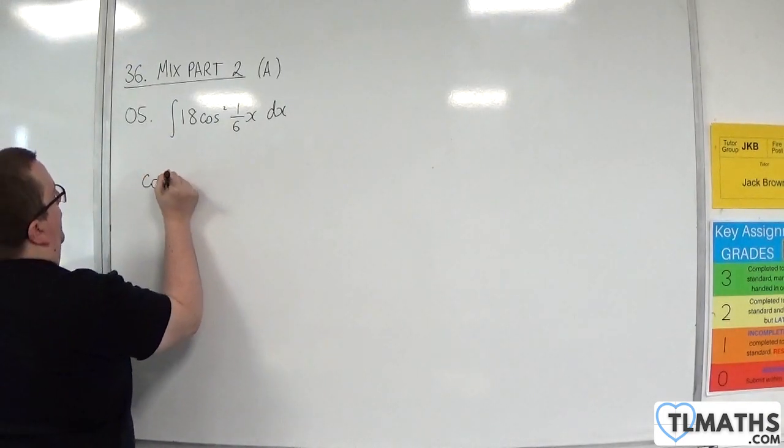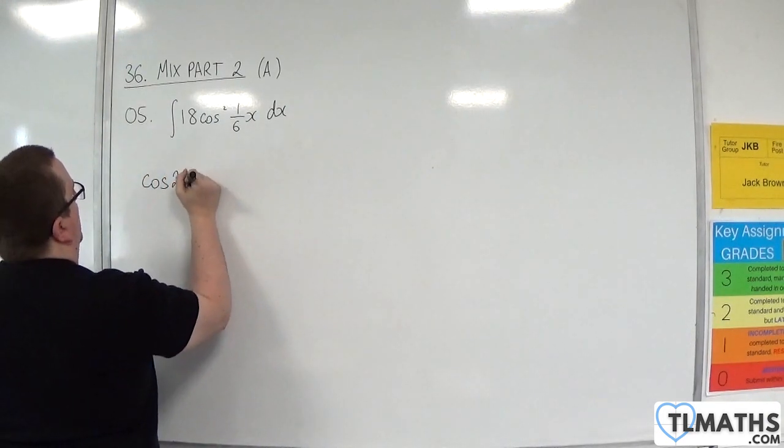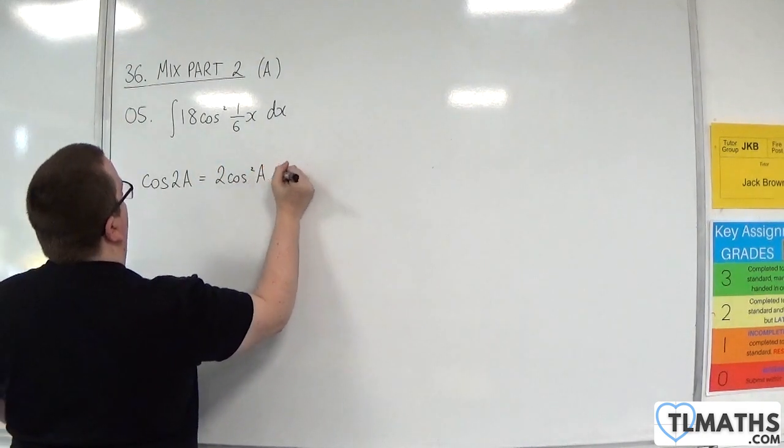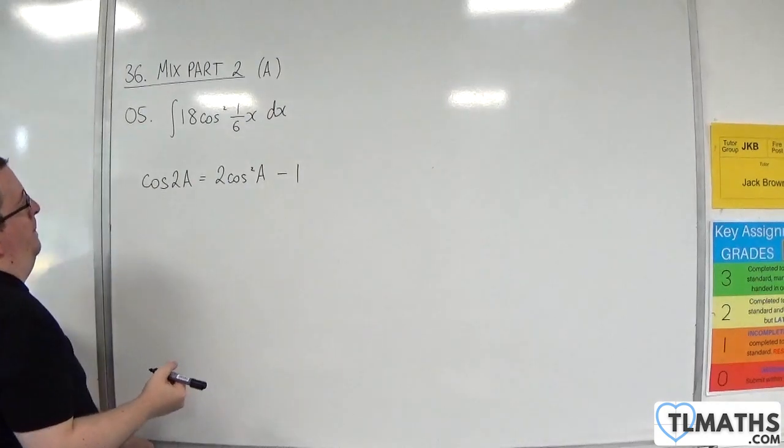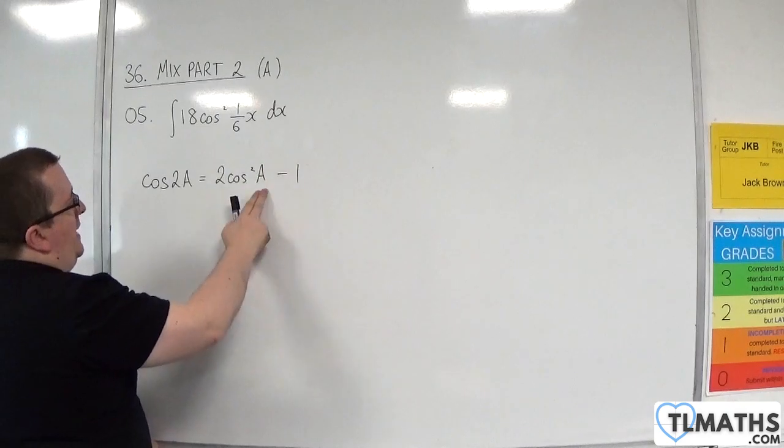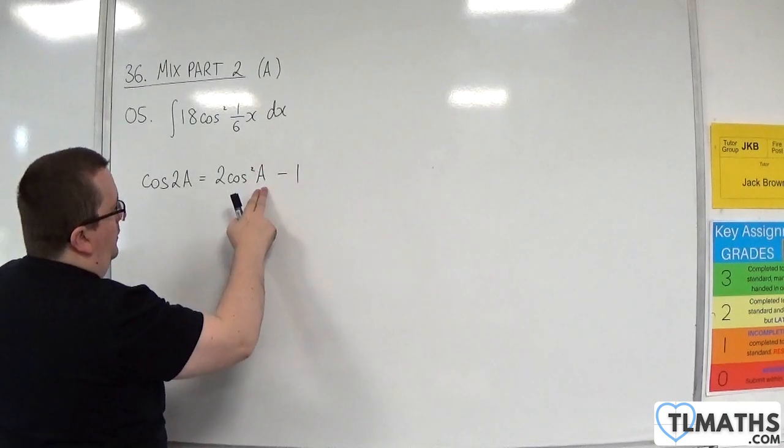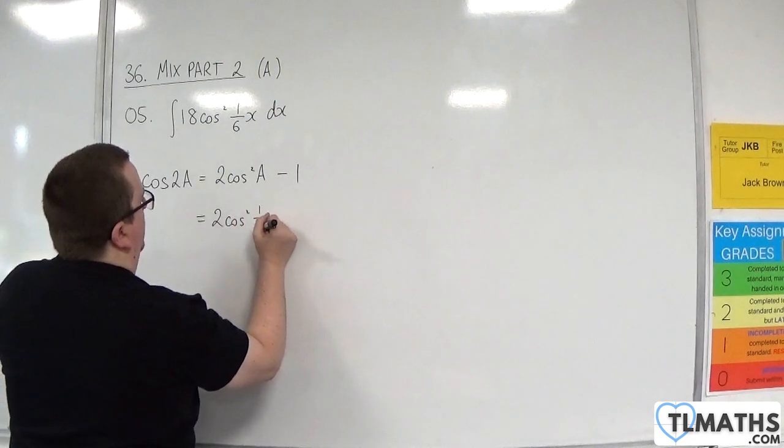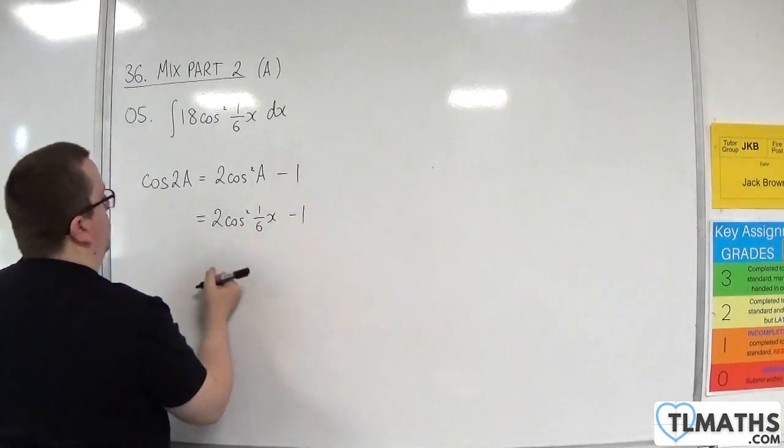Cosine of 2a is 2 cosine squared a minus 1. Now, we want to work with one-sixth x, so the a here needs to be one-sixth x. So, 2 cosine squared one-sixth x minus 1.